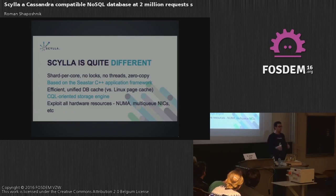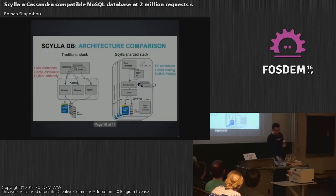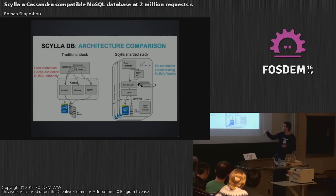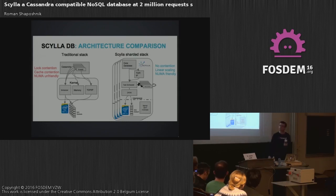It also touches upon another topic that is super exciting to me, which is called Unikernel. This is the idea of running an application linked together with a kernel inside of ring zero, so that there is no kernel, there is no application — there is just raw hardware speed at your disposal. The traditional architecture, something like Cassandra, basically goes through the kernel for just about anything: scheduling, memory, TCP/IP. Scylla is different because the kernel is not involved — we basically have NIC queues that are completely offloaded, and everything else at the top we are managing ourselves.